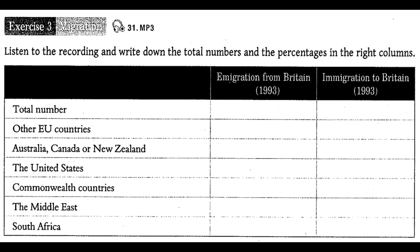There were 215,900 new residents who came to live in Britain. 32% of them came from other EU countries. And 16% of them came from Australia,